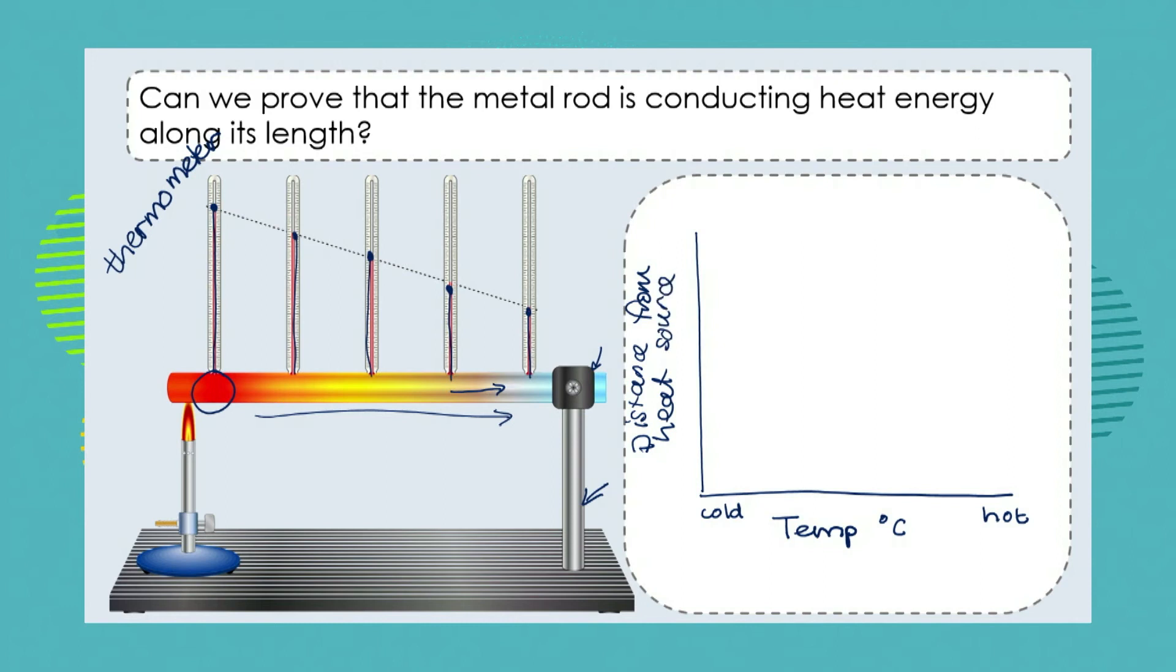So here it's going to be close to the heat source and here it's going to be far from the heat source. So very close to the heat source our temperature is going to be really hot. As we move further away, in other words down the rod towards the colder part, our metal rod is going to be colder and colder. And so we're going to be able to draw a graph that shows that as the temperature increases we can notice that we've moved closer and closer to our heat source itself.